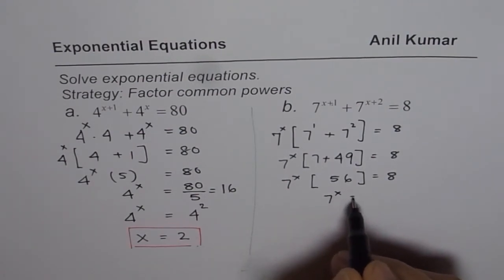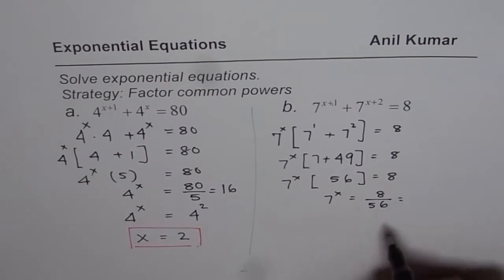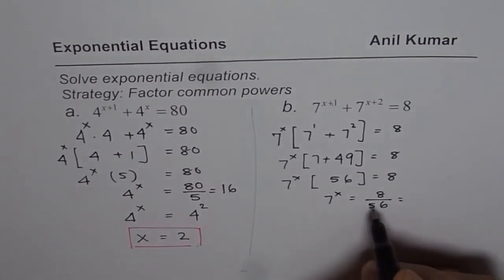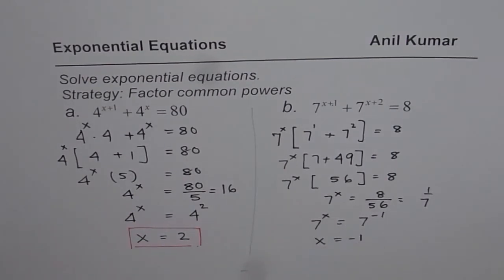7 to the power of x is 8 divided by 56. Now, 56 is 7 times 8, so we get 1 over 7. We could write 7 to the power of x as equals to 7 to the power of minus 1, same base. That means, exponent should be equal. x is equal to minus 1. That becomes the solution of the second equation.